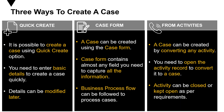The third option is from activities. For example, if you get a phone call, an email, or a task that is in the system, you can convert those activities into a case. Rather than copying and pasting all the information, you can just click on a button called 'Convert To' and convert it to a case. An activity can be closed or kept open as per the requirements.